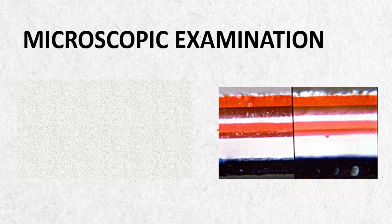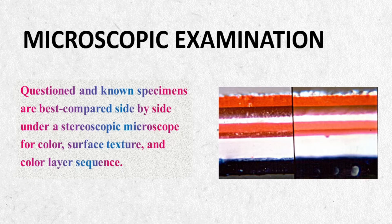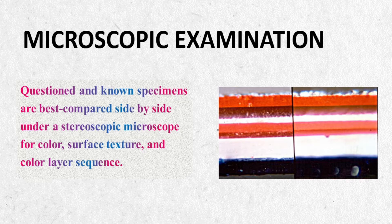Microscopic examination of paints: The microscope has traditionally been and remains the most important instrument for locating and comparing paint specimens. Considering the thousands of paint colors and shades, it is quite understandable why color, more than any other property, imparts paint with its most distinctive forensic characteristics. Questioned and known specimens are best compared side by side under a stereoscopic microscope for color, surface texture and color layer sequence.